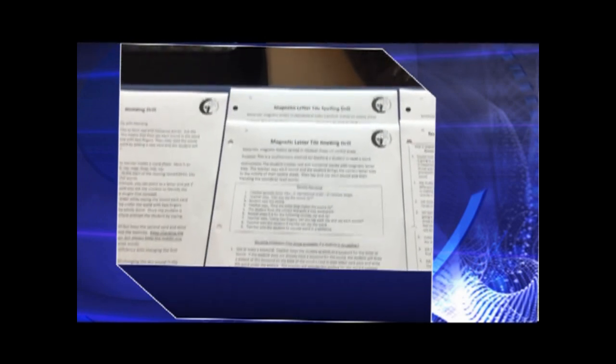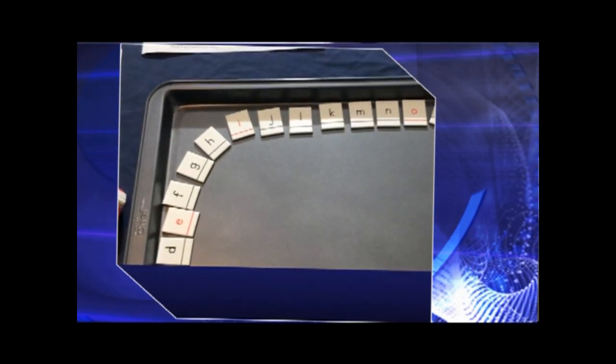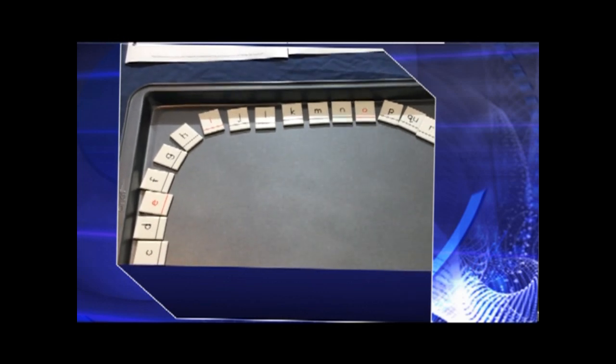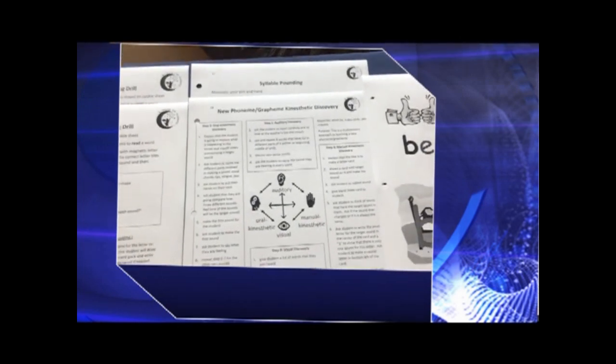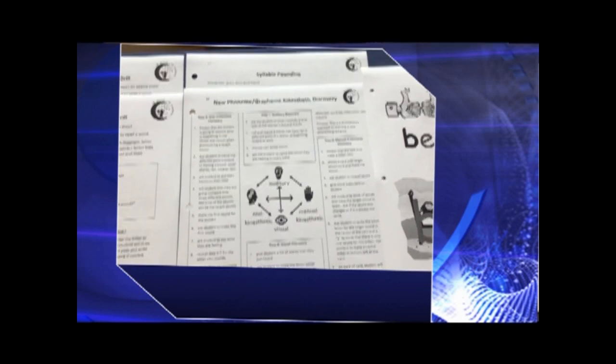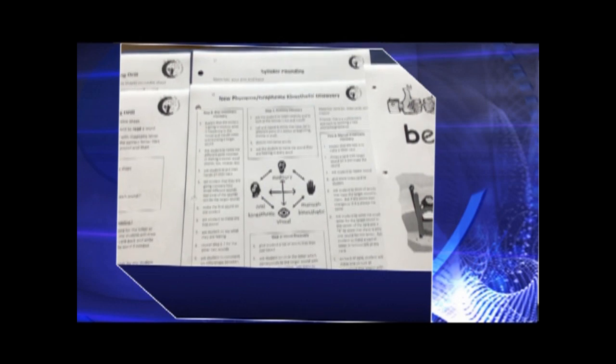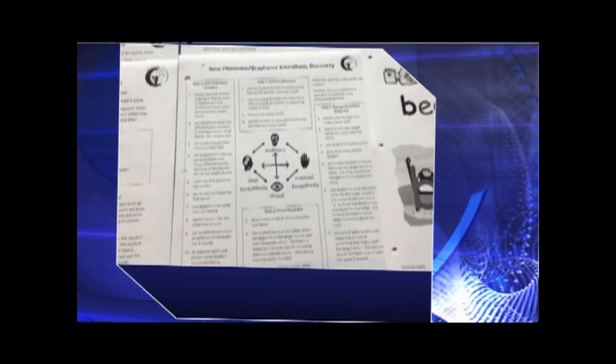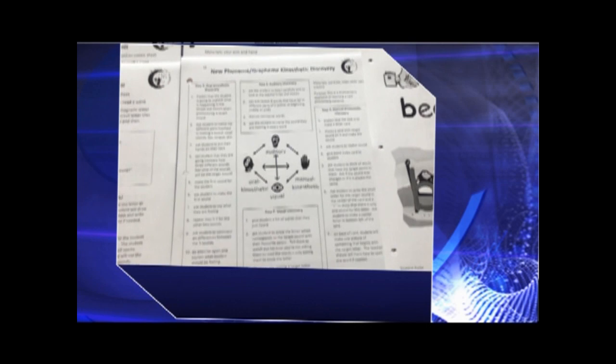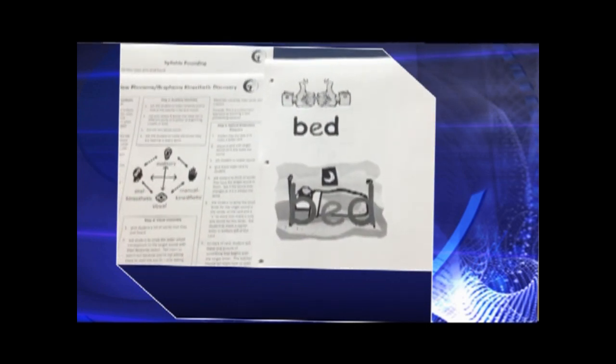Then we've got the magnetic letter tile reading and spelling drills. For those, we use the magnetic letter tiles on a cookie sheet spread out in a rainbow shape. The syllable pounding sheet wasn't used in lesson one and won't be used for a while, but keep it in the mix. We will use the new phoneme-grapheme kinesthetic discovery method today. At the very end of the table, you'll have the sheets printed out and attached to the lesson plan.